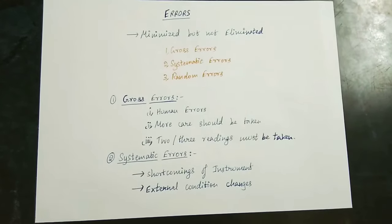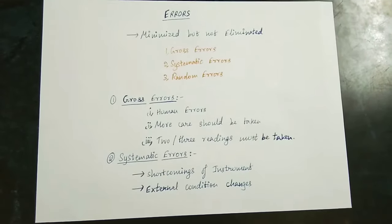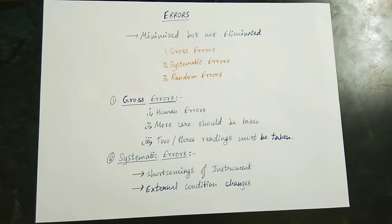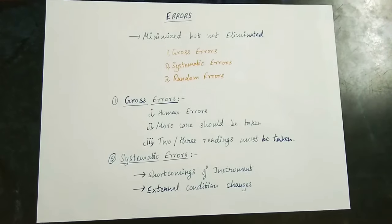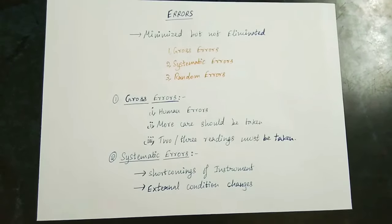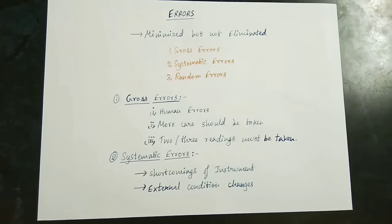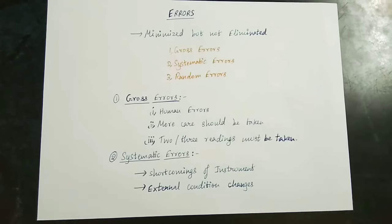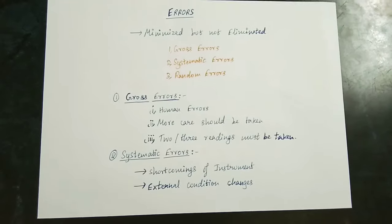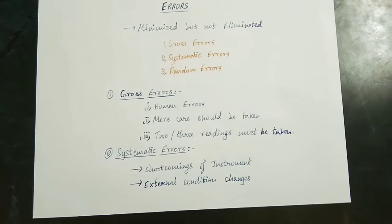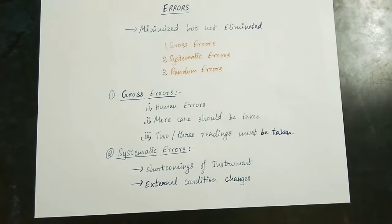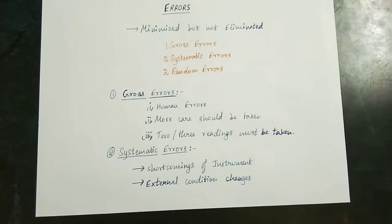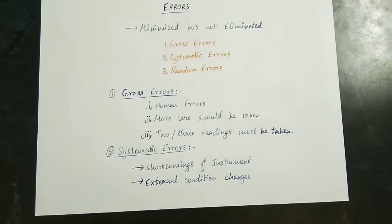One thing here is that the calculation might be changed, the design might be changed. We check one, two, three readings — you can repeat the reading and correct it. That's why we can correct gross error. This is the gross error and its correction.